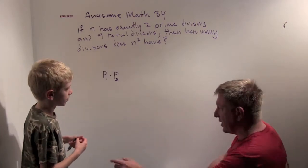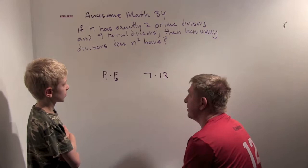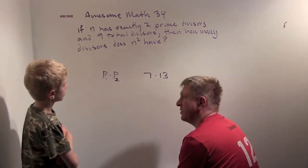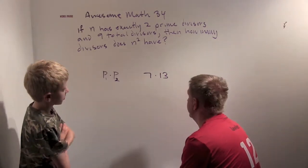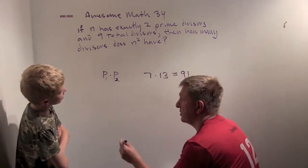So that might be like, maybe we have 7 times 13, for example. Do you know what 7 times 13 is? 91. Okay, so does 91 have 9 divisors?